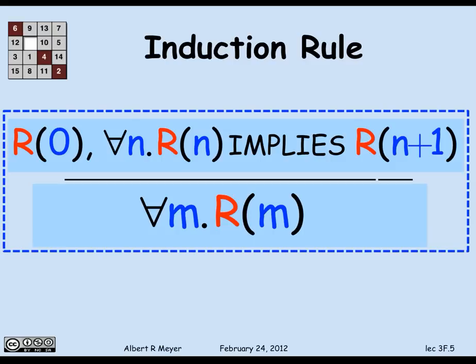It's the rule that if you've proved r of 0, and you've proved that for every n, r of n implies r of n plus 1, then you can conclude that for every m, r of m holds, where all variables range over the non-negative integers. I used n above the line and m below just to emphasize those variables have nothing to do with each other — just as in a procedure, parameters are local variables and can be named anything.